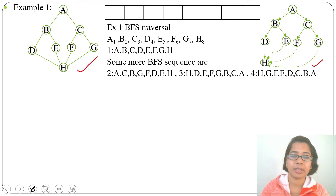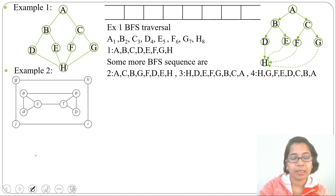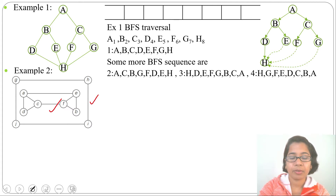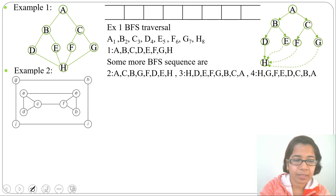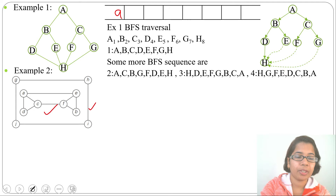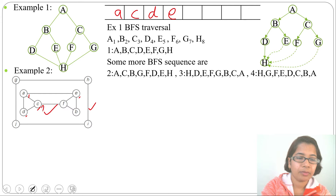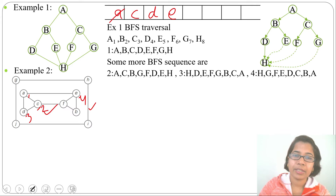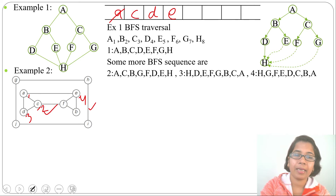Let's discuss another example — a two-component undirected graph. This is one component and this is another component. Let's do BFS traversal. Starting from A, we enqueue A. A's adjacents are C, D, and E, so we insert C, D, and E into the queue with numbers 1, 2, 3, and 4. We delete A. Next, C's adjacents are A, D, and F — A and D are already in the queue — so we insert F with number 5 and delete C.